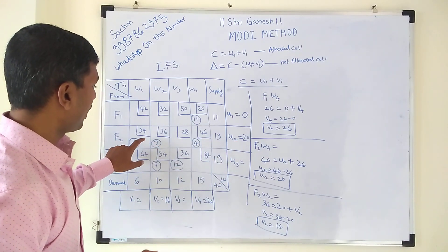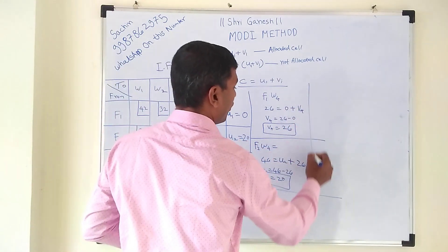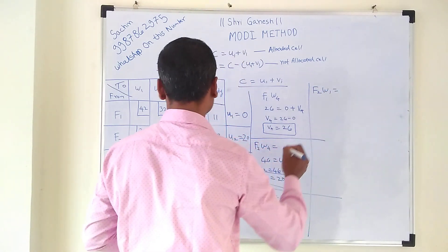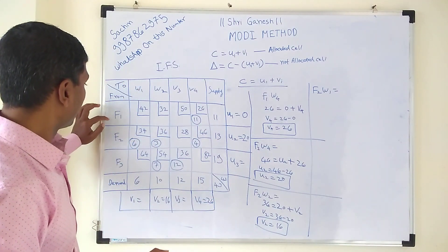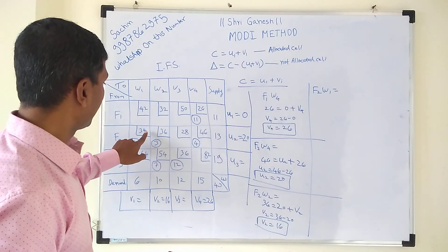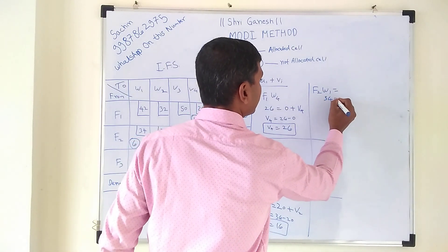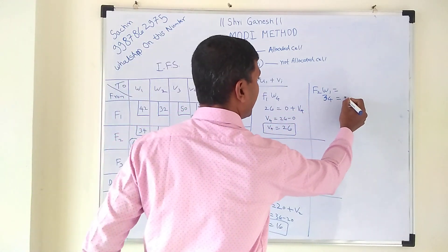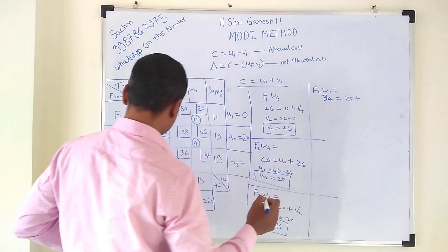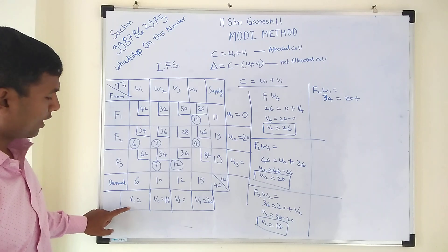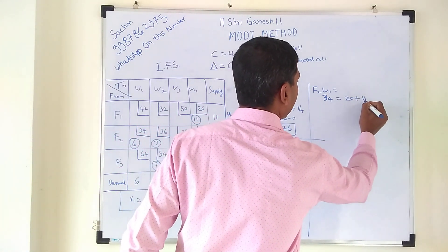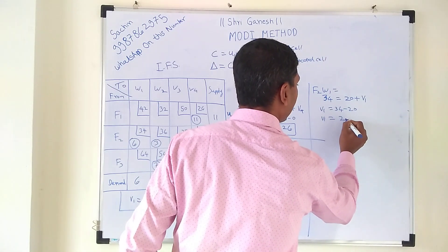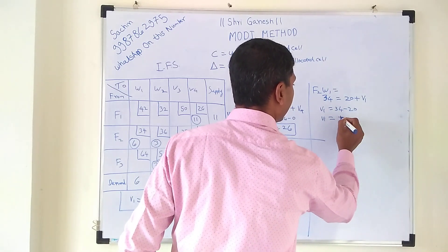There is one more allocation in that row: F2W1. The cost of F2W1 is 34. So: 34 = 20 + v1, which gives v1 = 34 − 20 = 14. We write v1 = 14.